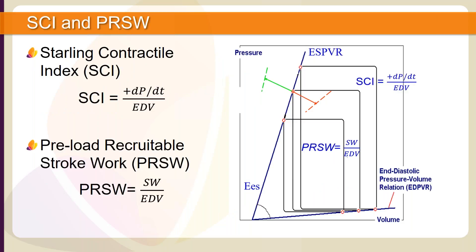The Starling Contractile Index tells us the ability of the heart to change its force of contraction and therefore the stroke volume in response to venous return. It can be derived by dividing max dP/dt by end-diastolic volume. The preload recruitable stroke work can be derived by dividing stroke work by end-diastolic volume, and gives us the contractile state of the entire cardiac cycle.